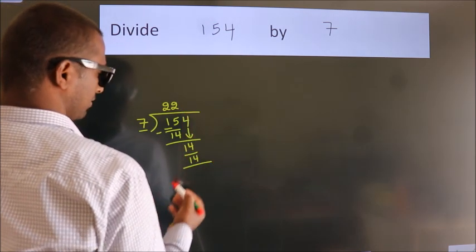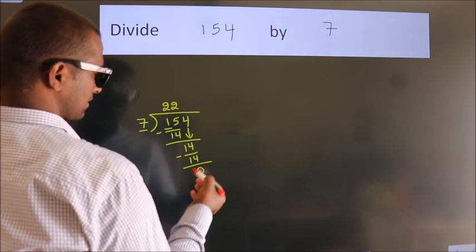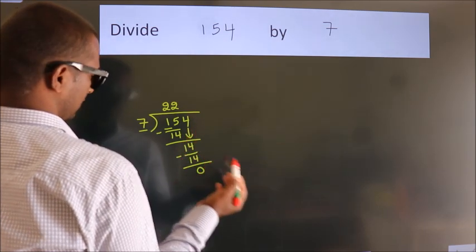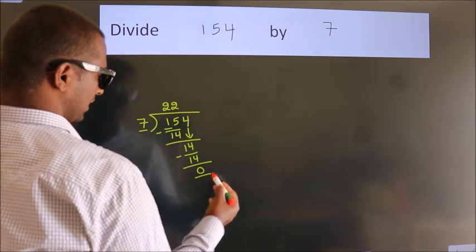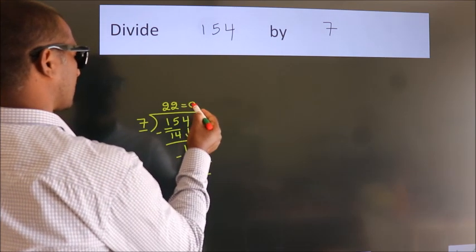Now we subtract, we get 0. After this, no more numbers to bring it down. And we got remainder 0. So this is our quotient.